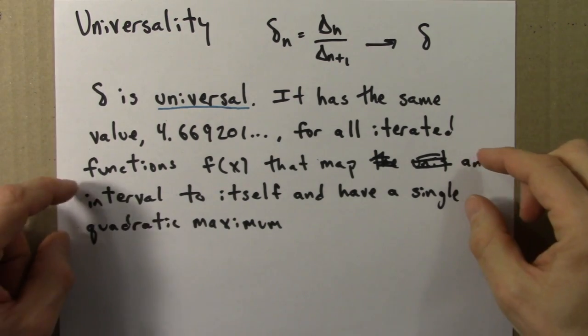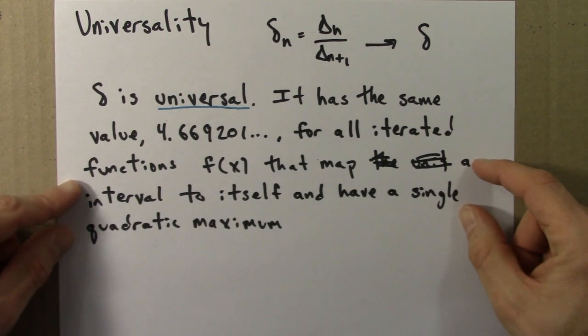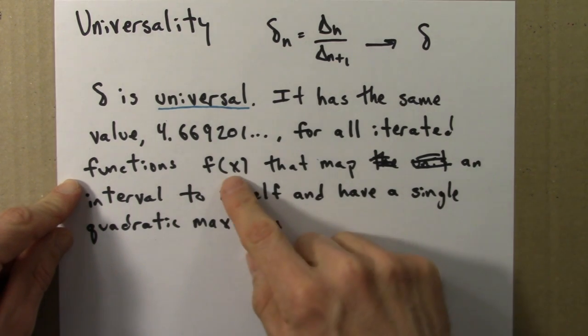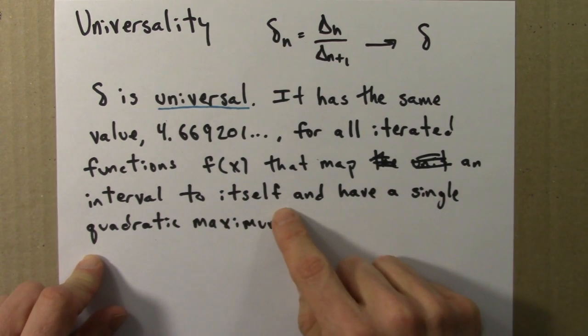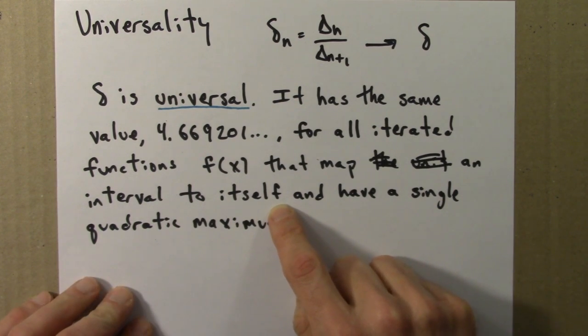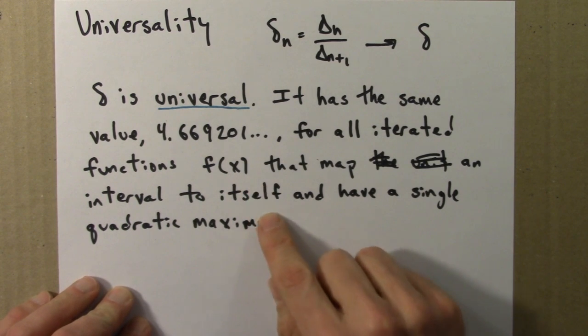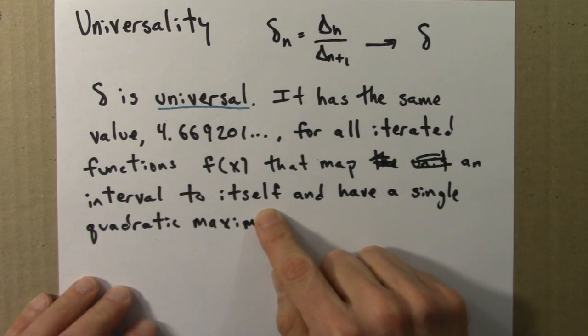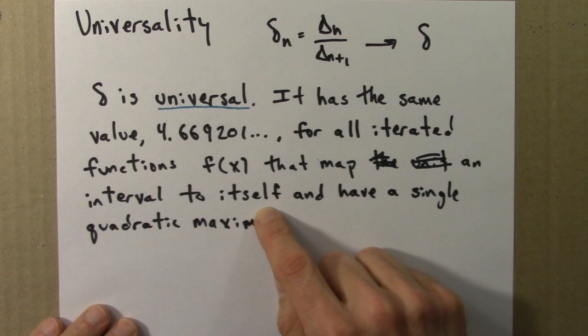So let me say a little bit about these conditions. If the function maps an interval to itself, that just excludes the possibility that orbits go off to infinity, positive or negative infinity. So the logistic equation is an example. It mapped the unit interval to itself, meaning numbers between 0 and 1 remain between 0 and 1.